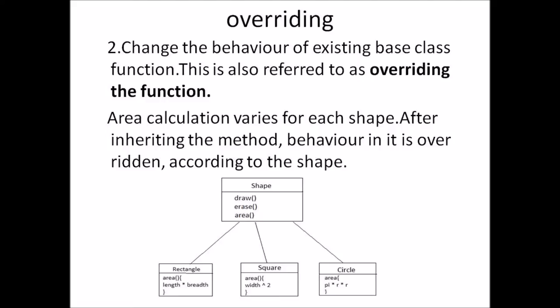The next way is changing the behavior of an existing base class function. This is also referred to as overriding the function. Rectangle, square and circle are derived classes which inherit the properties and behavior from base class shape. Here, draw and erase methods are the same everywhere, but the area calculation varies between these shapes. So the method is overridden here. This is one more method of achieving inheritance.